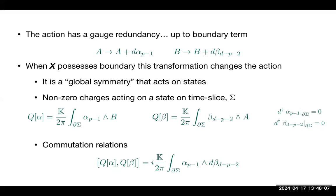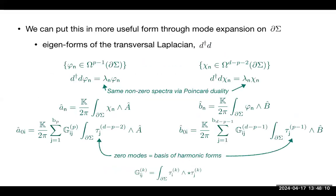To put the algebra in a useful form, a mode expansion is employed using eigenforms of the transversal Laplacian — one set for P-minus-one forms and one for D-minus-P-minus-2 forms. The non-zero spectrum of these modes is the same set, guaranteed by Hodge duality on the boundary of the spatial slice.